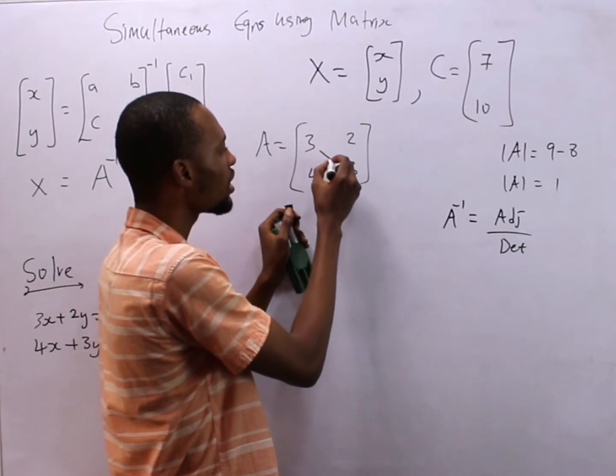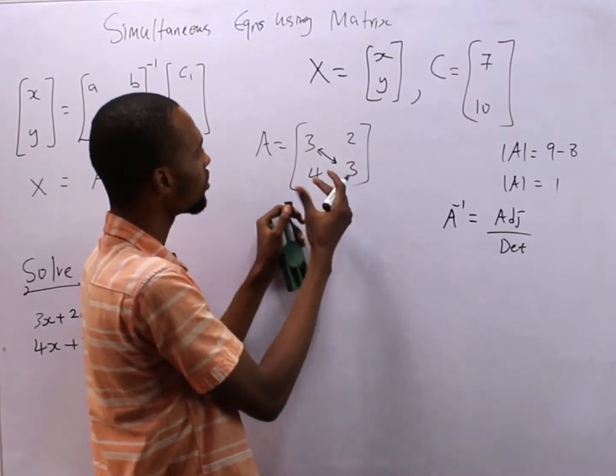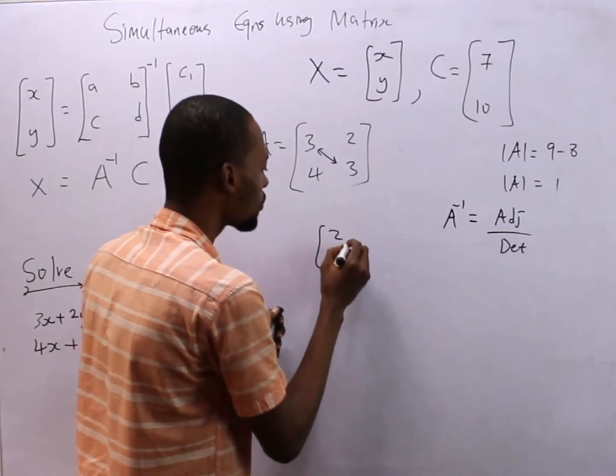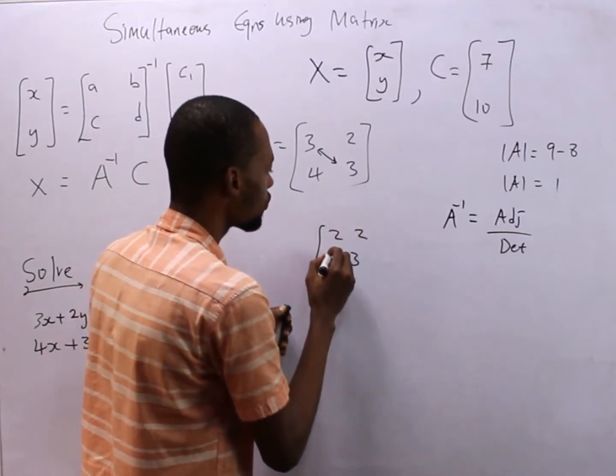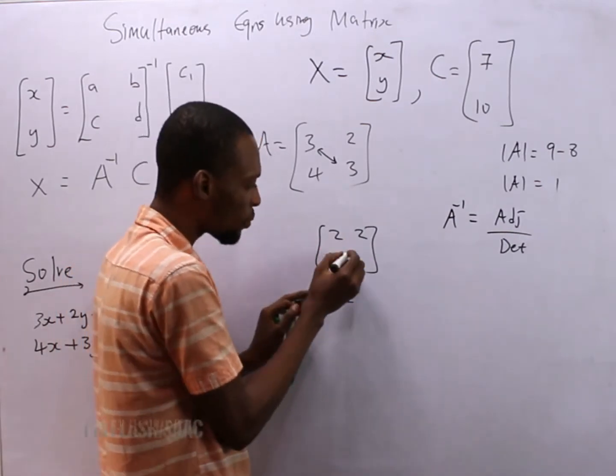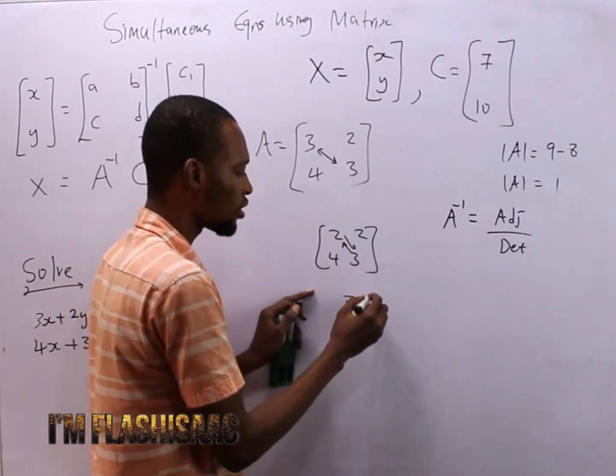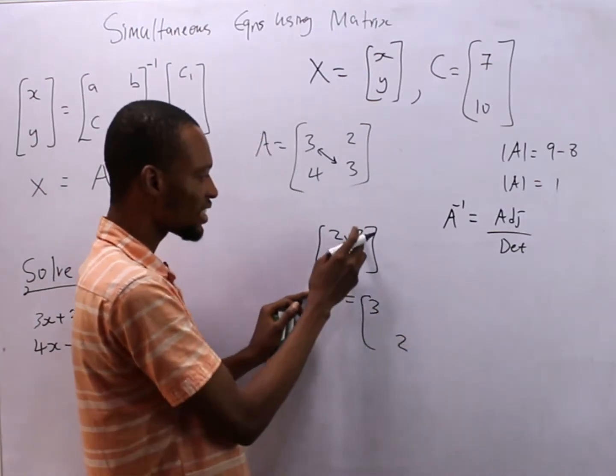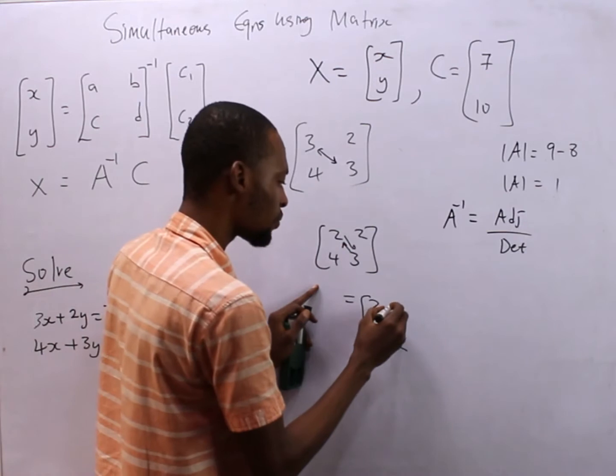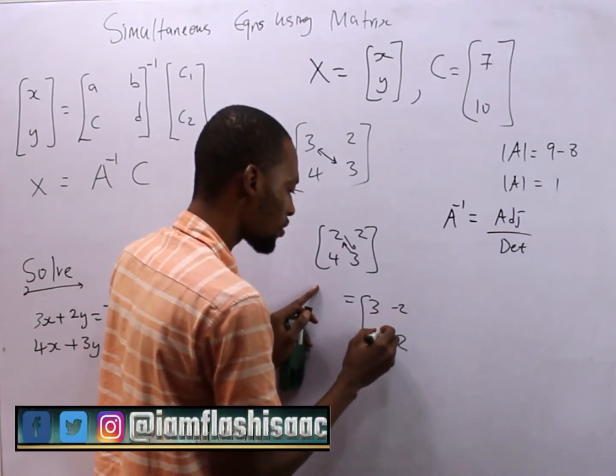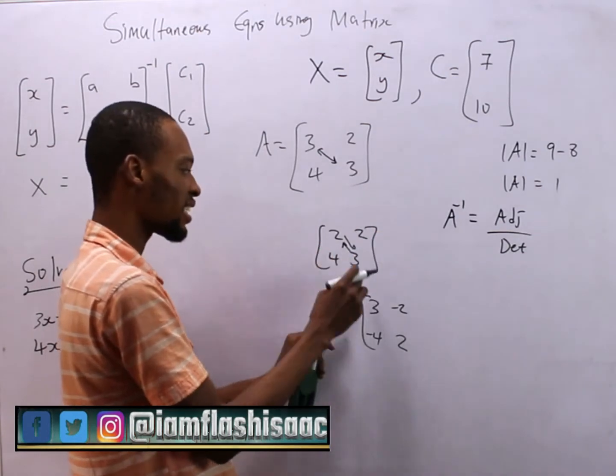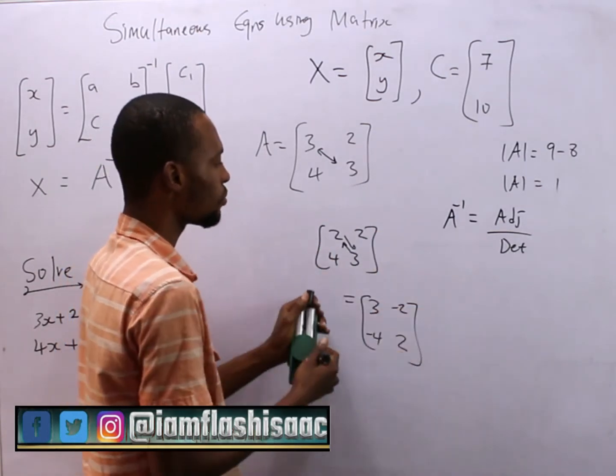A inverse is simply adjoint over determinant. We've already gotten the determinant to be 1. Adjoint is, look at how you get it: switch here. If you have something like 2, 3, 2, 4, the adjoint is simply you take this 3 up and bring this 2 down. You'll now be left with 3, 2. Then the guys that are here make them negative.